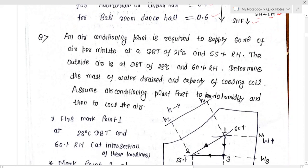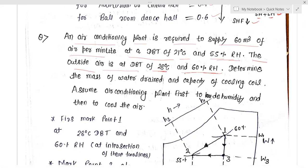Now we will discuss a numerical problem based on comfort air conditioning. An air conditioning plant is required to supply 60 cubic meters of air per minute at a dry bulb temperature of 21 degree centigrade and 55% relative humidity. The outside air condition is at 28 degree centigrade dry bulb temperature and 60% relative humidity.